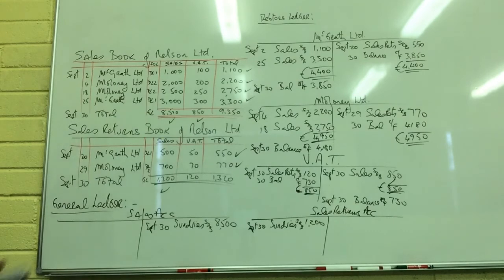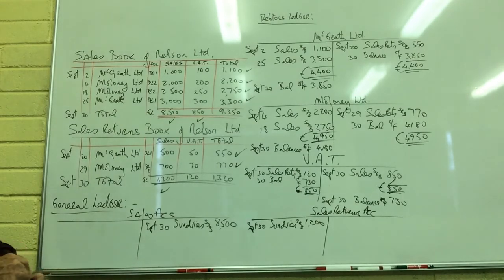We would place those five balances in our trial balance, and you'll find the debits match the credits — the trial balance is another day's work. So we've posted the sales day book and sales returns book for Nelson Limited.